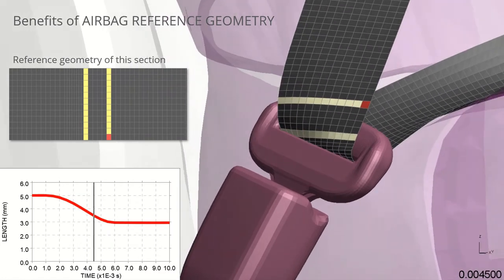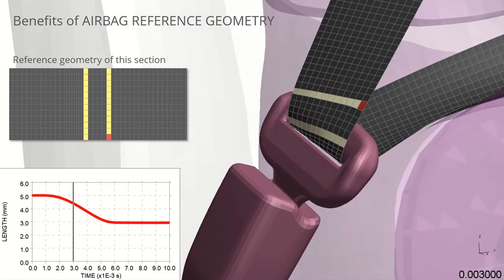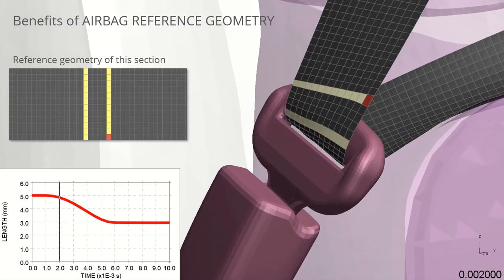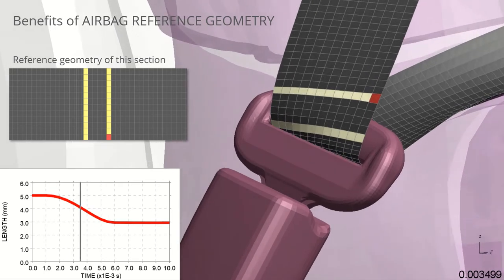The benefit of reference geometry can be seen here. A few elements in yellow and red were left stretched by the belt fitter. We can set a load curve in matte fabric to remove the stretch in the first 5 milliseconds.